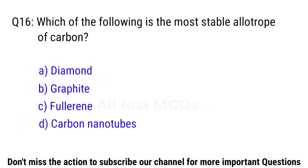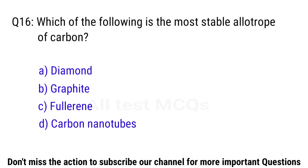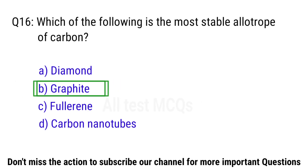Q16. Which of the following compounds is used in the Wacker process? The right answer is option B. Graphite.